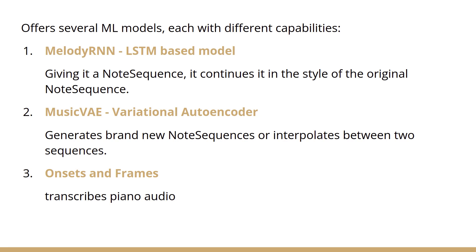In Magenta there are different types of pre-trained machine learning models with their own capabilities and functions. Some major ones are Melody RNNs, which is an LSTM-based model that, given a note sequence, continues further to generate music in the same style. Then we have Music VAE, which is a variational autoencoder that generates new sequences and can also combine two music pieces to produce one different piece. Then we have Onsets and Frames to transcribe piano audio.